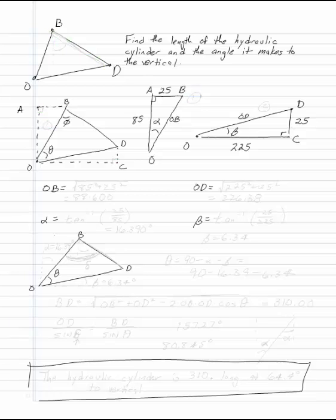Find the length of the hydraulic cylinder and the angle that it makes to the vertical. So we're looking for this length right here, BD. That triangle is not a right triangle, so we are going to use the law of sines and cosines to figure out what its length is and what the angle is to the vertical.